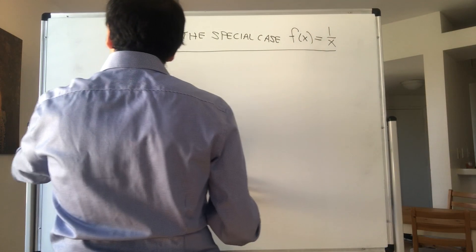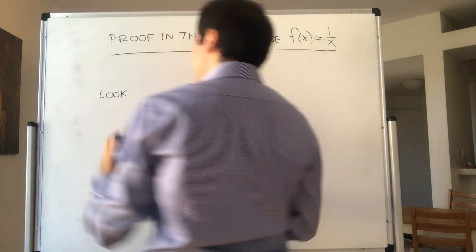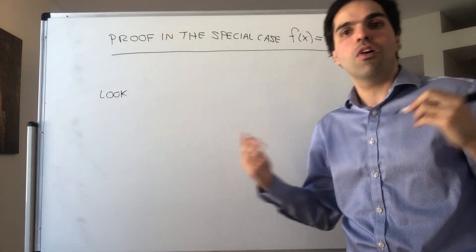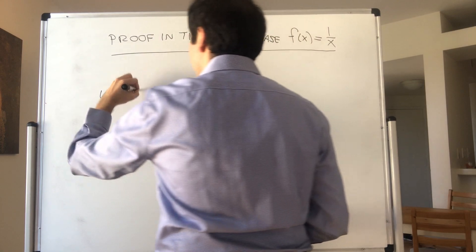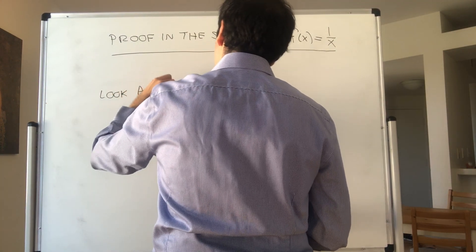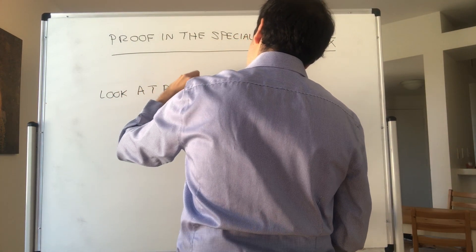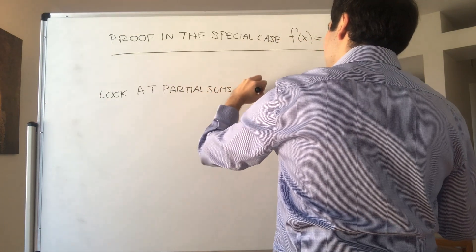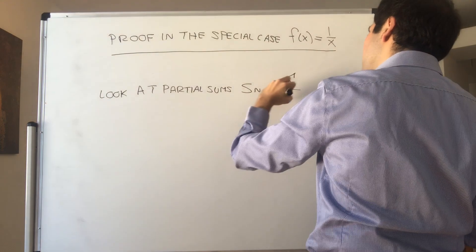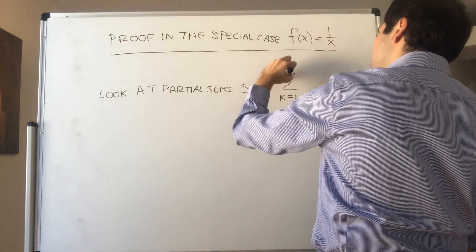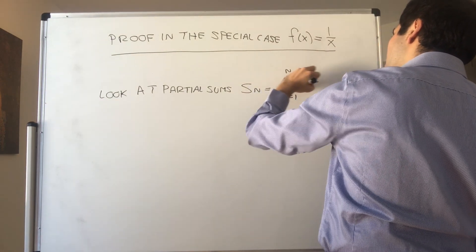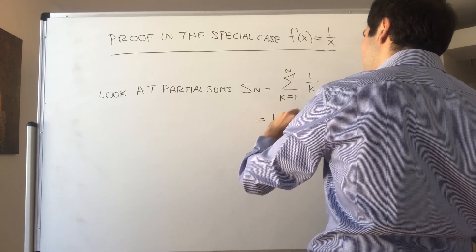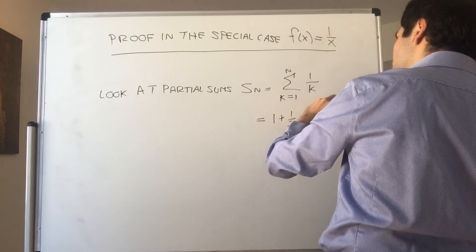To prove that the series converges or diverges, you would usually look at the partial sums. S_n, if you want, is the sum from k equals 1 to n of 1 over k, which is just 1 plus 1 half plus dot dot dot plus 1 over n.